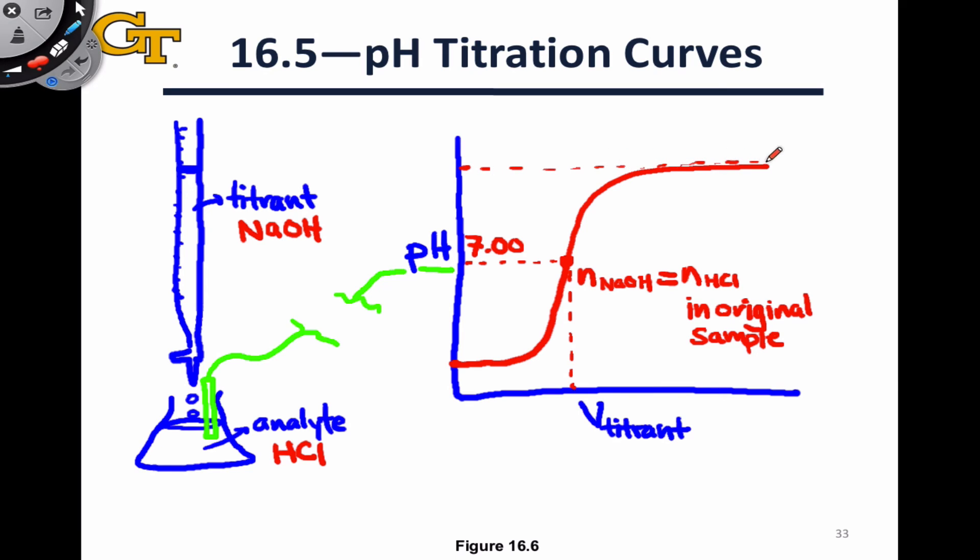And one thing I want you to think about is what this pH up here near the top of the titration curve represents. At very large volumes of titrant, we've consumed all of the acid present, and all we're doing is adding additional hydroxide and water present in the titrant. So the maximum pH here is the pH of the titrant solution itself. We can't decrease the concentration of hydronium any lower than it is in the titrant solution through the addition of additional base. And so our maximum pH is limited by the pH of the titrant.